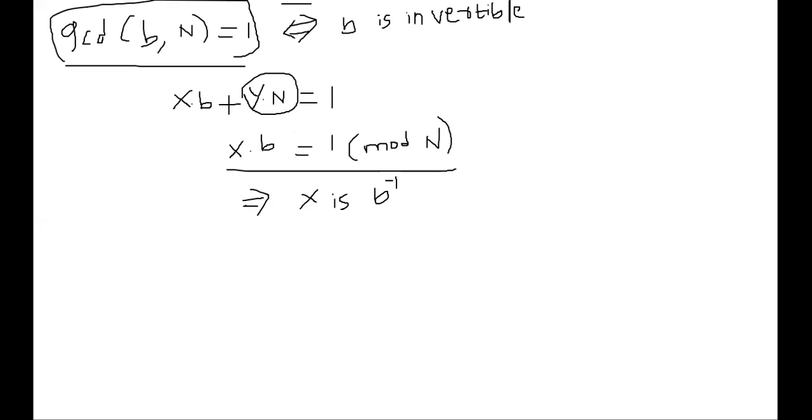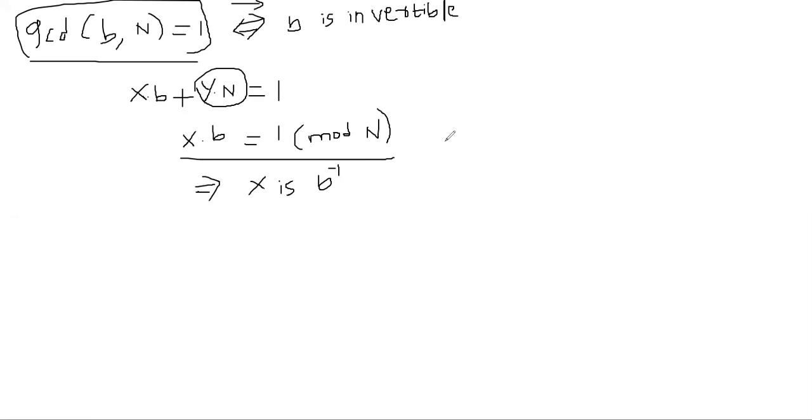What about the other direction? We can actually prove the other direction as well. Suppose b is invertible. What it means is that you will be able to find a number c such that c times b is one. That's the meaning of invertible in mod n.